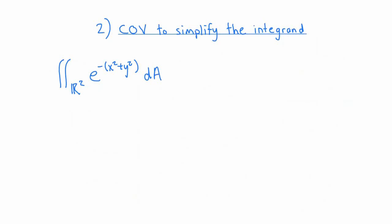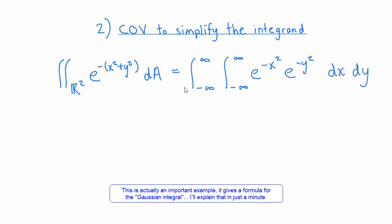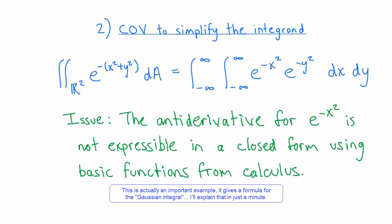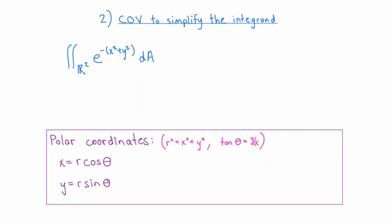Next I want to consider an example of how change of variables can be used to simplify the integrand in a multiple integral. Let's consider the double integral over the whole plane of e to the minus (x squared plus y squared) dA. We could try to evaluate this integral by writing it as an iterated integral and splitting the integrand apart as e to the minus x squared times e to the minus y squared. The issue, which you may have come across before, is that the antiderivative for e to the minus x squared is not expressible in closed form using the basic functions that you learned in calculus.